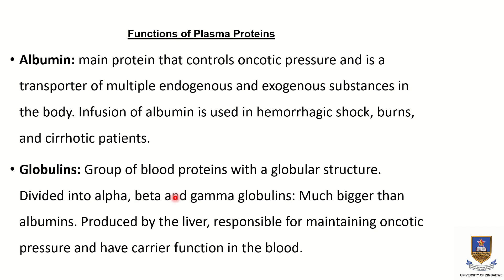Globulins are also a group of proteins which maintain oncotic pressure. They have a globular structure and are divided into alpha, beta, and gamma globulins. They are much bigger and larger than albumins and are produced by the liver, the same as albumins.